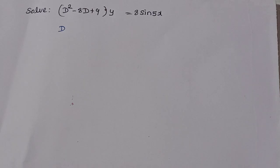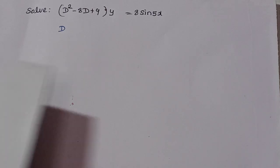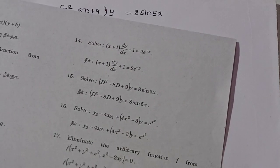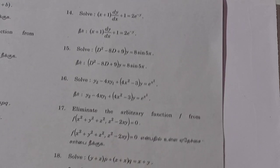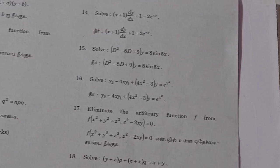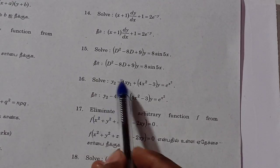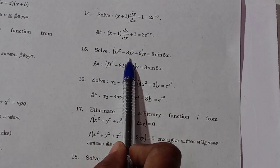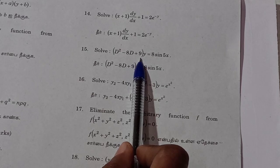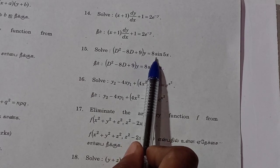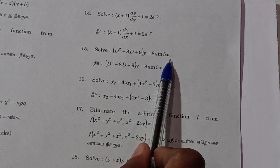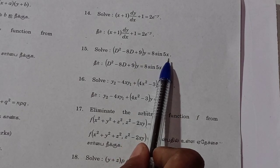Let's look at the differential equation in the April 23 question paper, questions 13, 14, and 15. The equation is: D squared minus 8D plus 9 of Y equals 8 sin 5x.